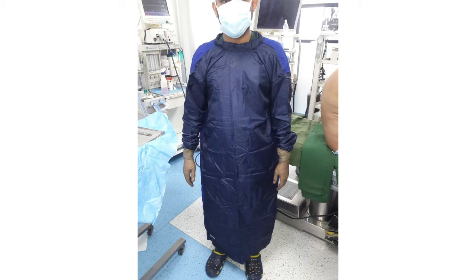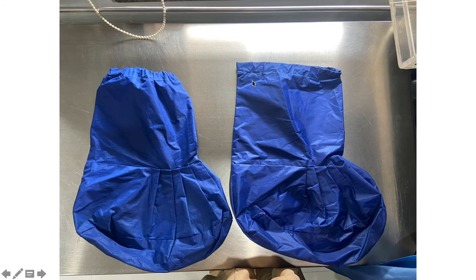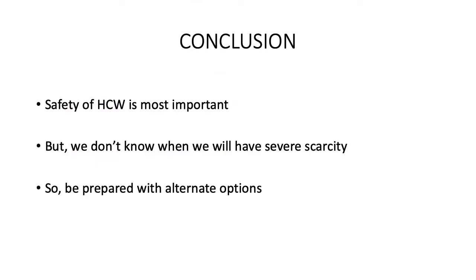Gowns made from impervious material can be used when there is a shortage of PPE. Reusable shoe covers made of impervious material can be properly sterilized after use and reused. These innovations are useful in cases of severe PPE scarcity. Safety of healthcare workers is the most important priority. We must prepare for the worst — as in the US with 10 lakh cases and 50,000 deaths, it can happen anywhere — so be prepared with alternate options.